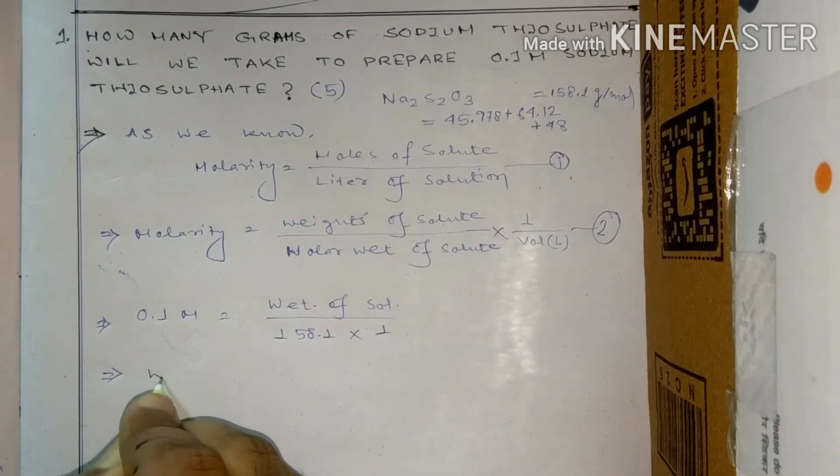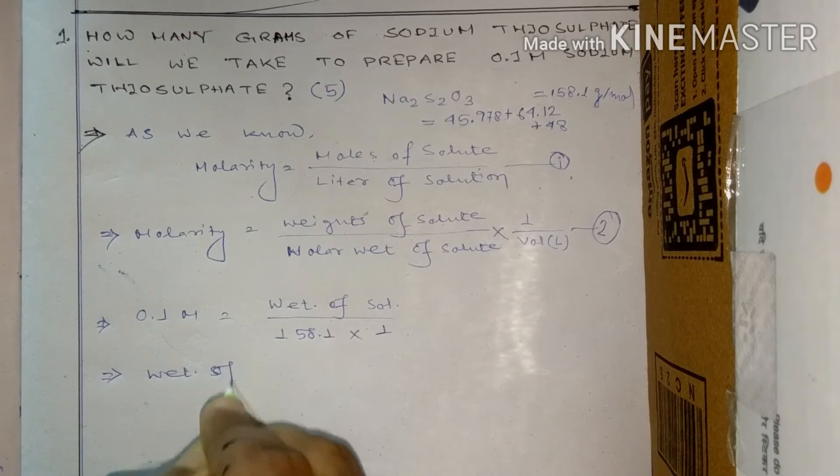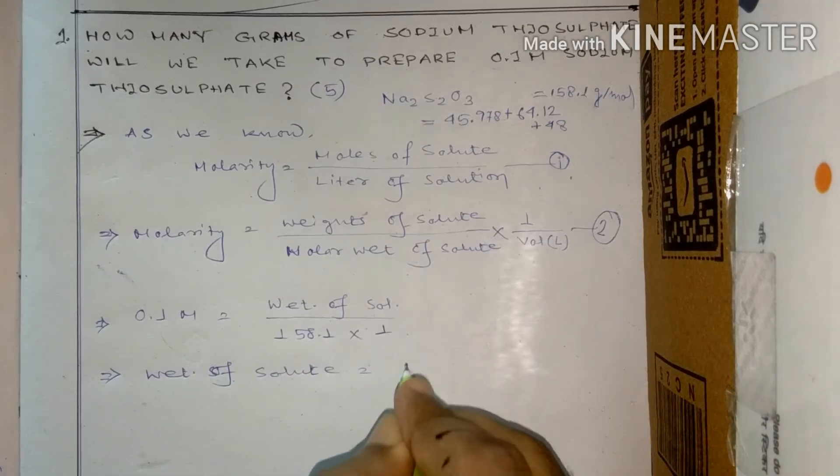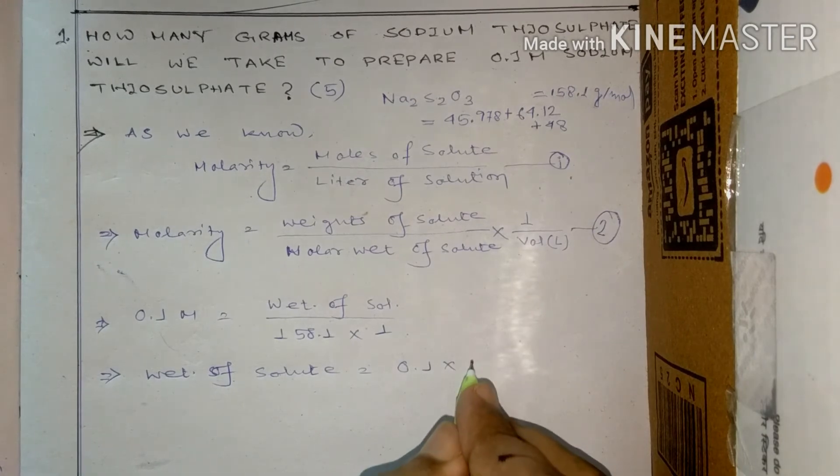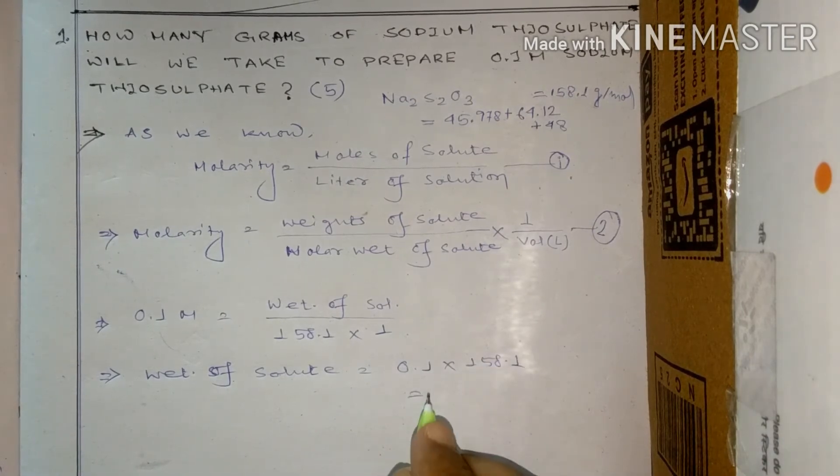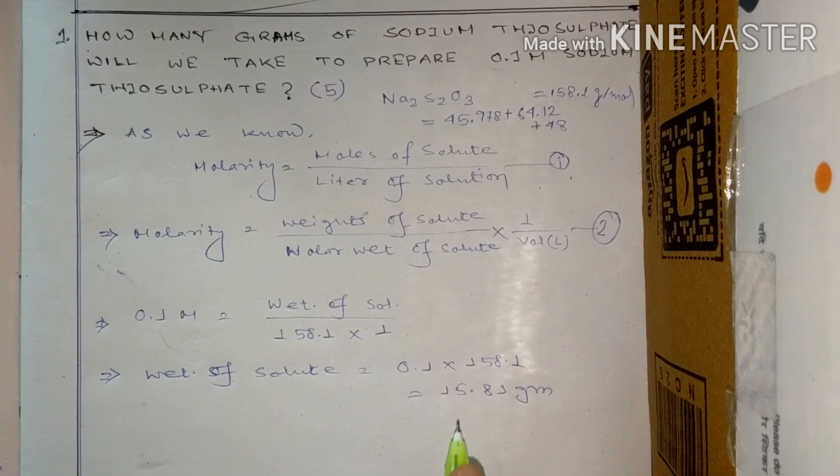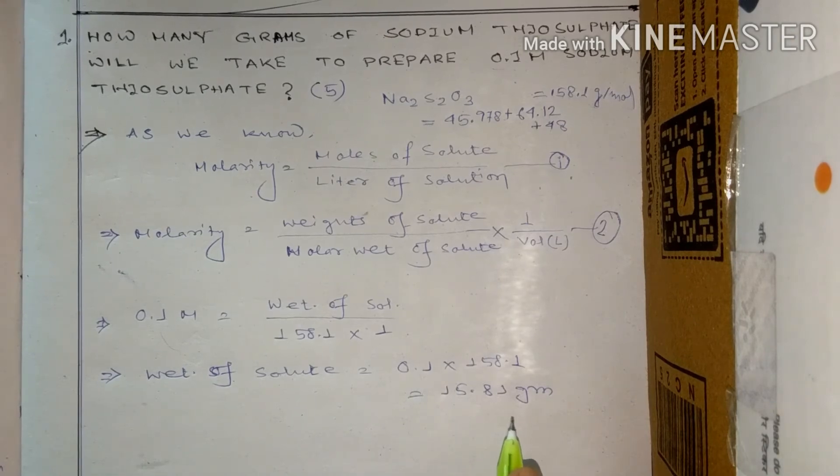So the thing is that weight of solute equals 0.1 times 158.1, so it means 15.81 grams.